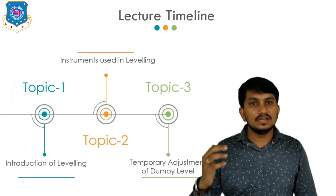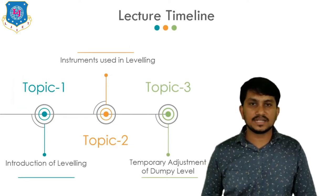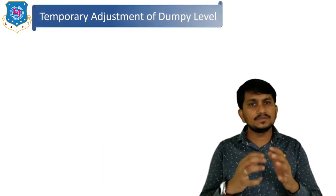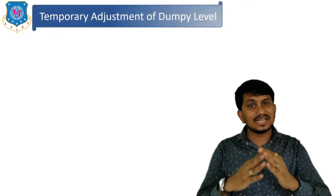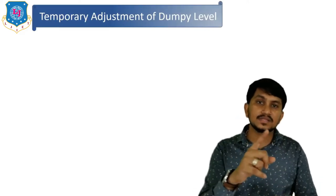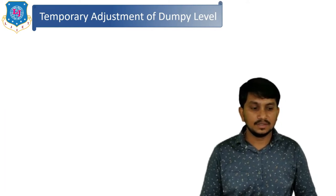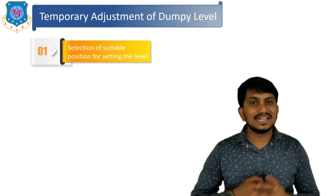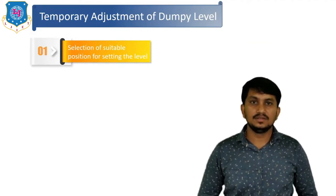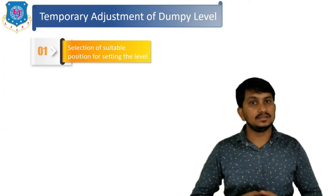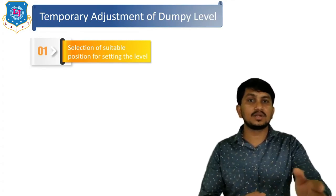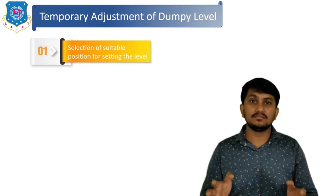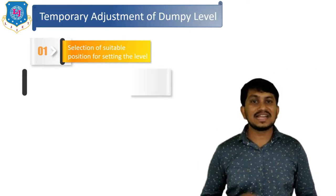Now let's move to the temporary adjustment steps of the dumpy level. These are the steps that should be taken before taking the first reading. The first step is selection of a site for setting up the instrument — we select a site from which we can easily take a number of readings, such that the maximum number of readings are taken with the least number of setups.